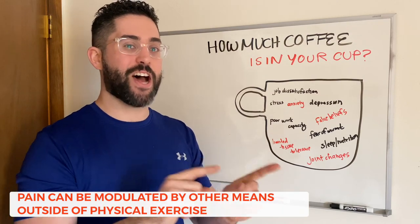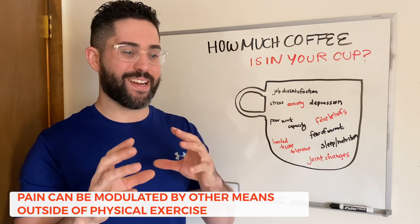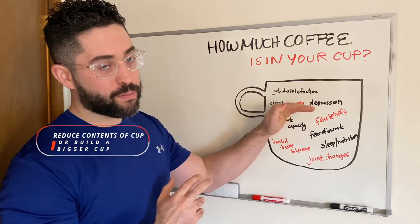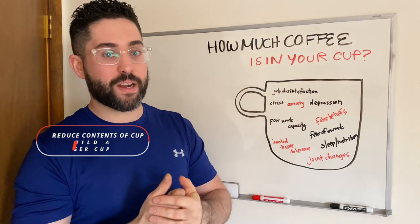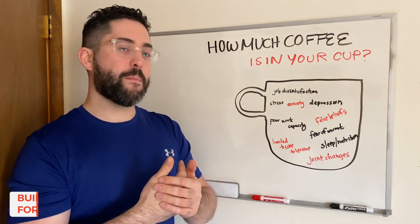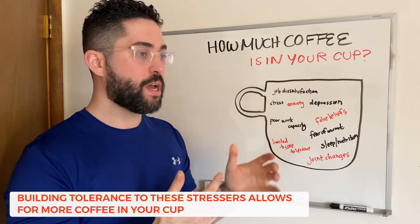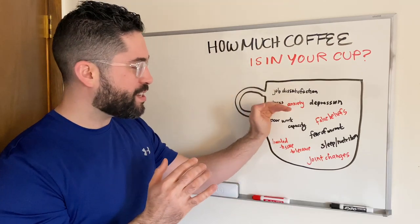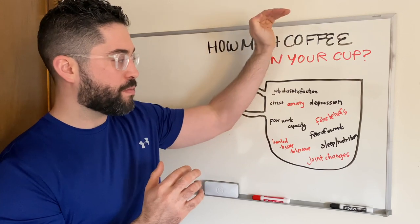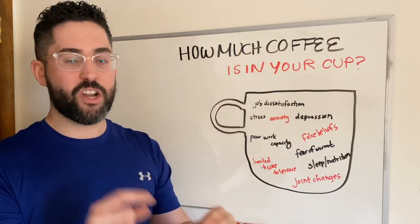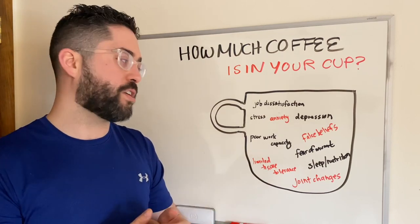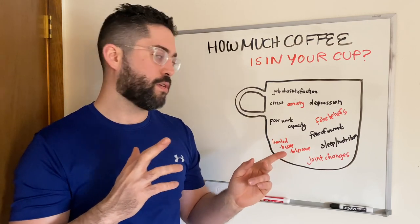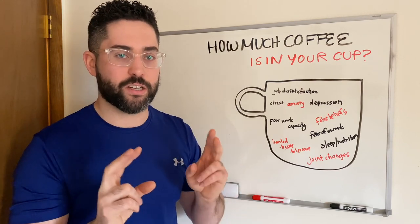I'm not advocating to avoid exercise for pain — I'm just saying pain can be modulated by other means. The second approach: you can either reduce the contents of the cup or build a bigger cup. How do we build a bigger cup? Strength training and aerobic work — these build your tolerance to stressors and build a bigger cup, so you can have more coffee before it overflows. It's not either/or — not just strength and aerobic training while ignoring the psychosocial factors, and not just mindfulness while never exercising. It's a one-two punch.